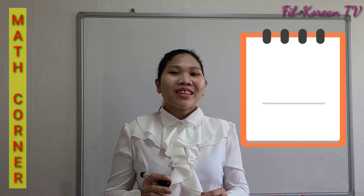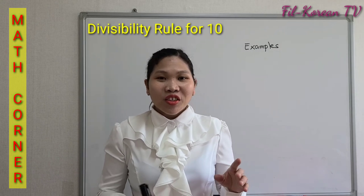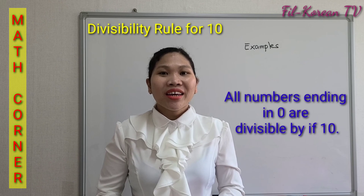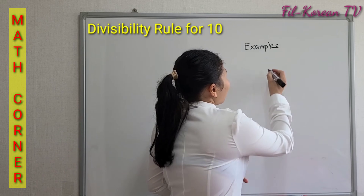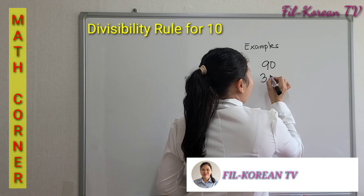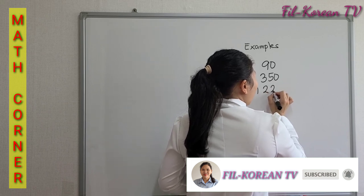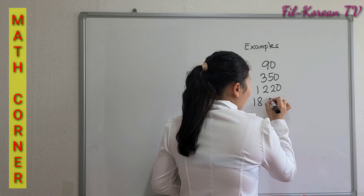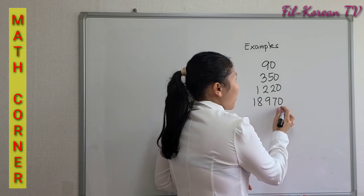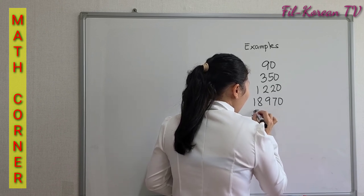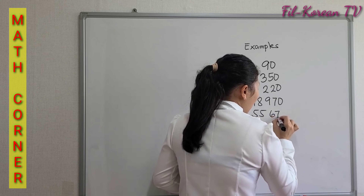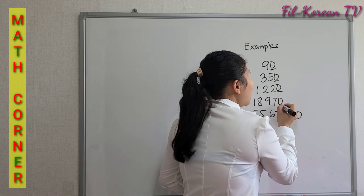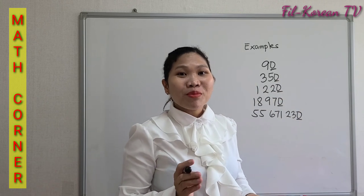Let's proceed to the divisibility rule of 10. The divisibility rule for 10 is very easy — you must just remember that all numbers ending in 0 are divisible by 10. Examples: 90, 350, 1,220, 18,970, and even higher numbers. Just remember the last digit must be 0 in order for the number to be divisible by 10.